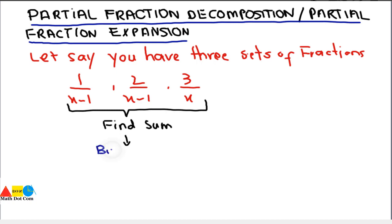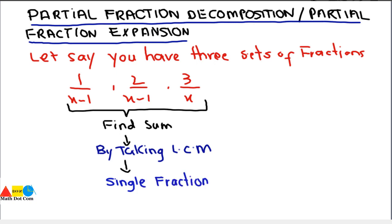We can find the sum of these three fractions by taking the LCM. By taking the LCM, you can find the sum of these three fractions. After finding the LCM, you will get a single fraction that is made up of these three fractions. This single fraction is also known as a resultant fraction. It is obvious that in order to find a single fraction out of these three fractions, it is easier by taking the LCM and finding the sum.